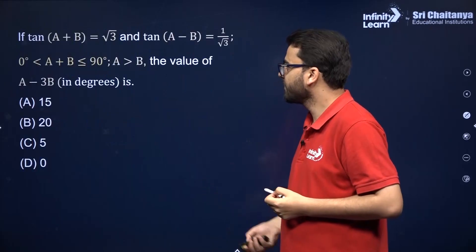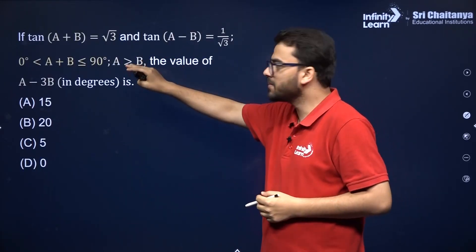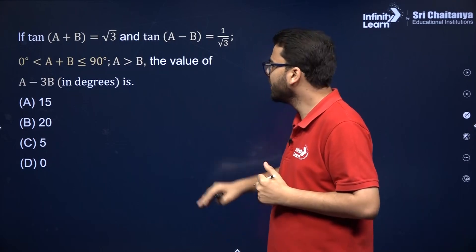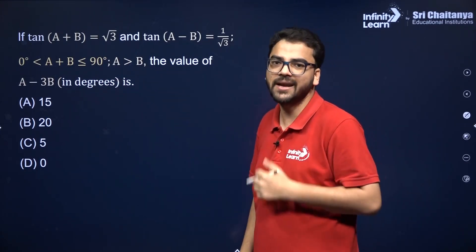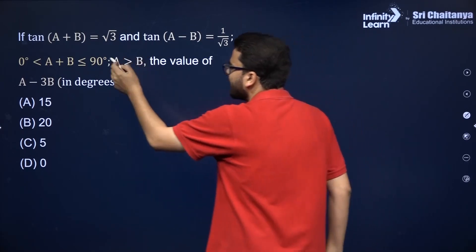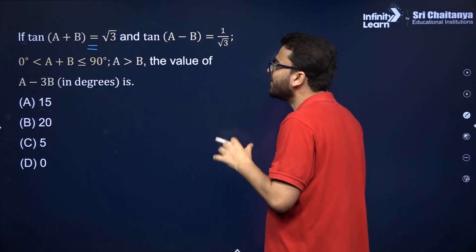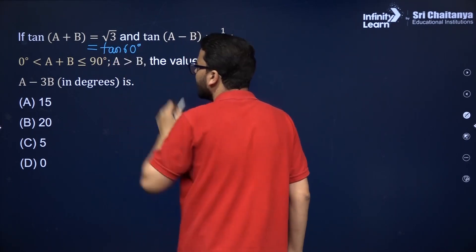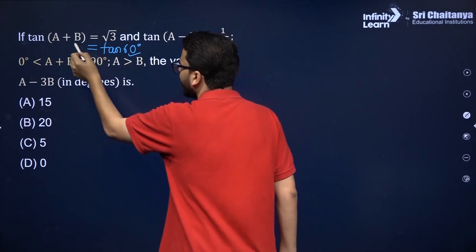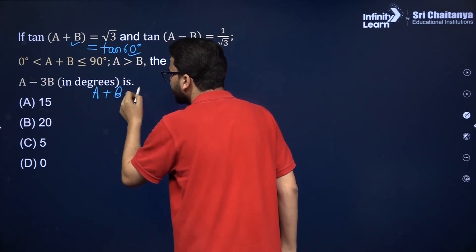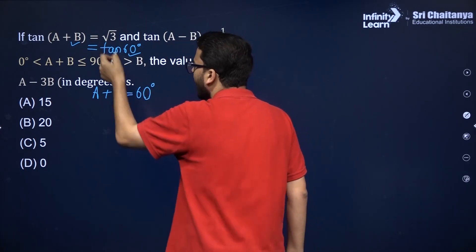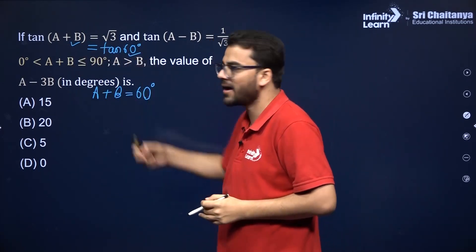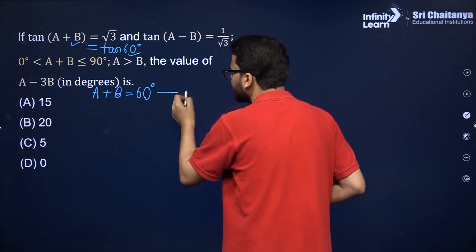Next MCQ: tan(A+B) = √3 and tan(A-B) = 1/√3, with angles between 0 and 90 degrees. You have to find the value of A minus 3B in degrees. Since tan θ = √3 when θ = 60°, we get A + B = 60 degrees. Note: please don't cancel tan — it is a notation, not a variable. So A + B = 60 is equation one.